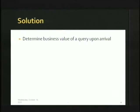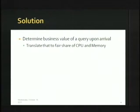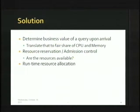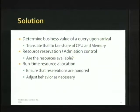The problem is: how can a database administrator keep everybody happy and align resource usage with the business value of queries? The solution we came up with in the Greenplum Parallel Database is fairly straightforward: upon arrival, determine the business value of the query using contextual information beyond just the SQL text; translate that to what fair share of CPU and memory it should get; reserve those resources; and if available, allow the query to proceed. The second part is ensuring the query behaves within its allocation — that's the runtime resource allocation part.